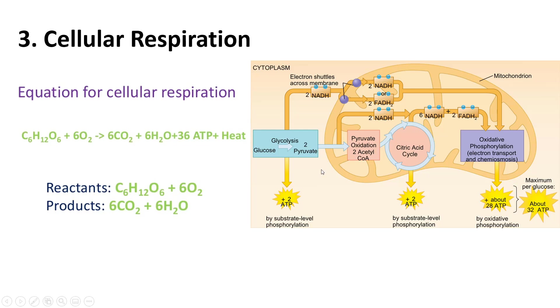Next is cellular respiration. What's the purpose of cellular respiration? Well, here's the overall equation. C6H12O6, which is glucose, plus oxygen, yields carbon dioxide, water, and 36 ATP, plus a byproduct of heat.